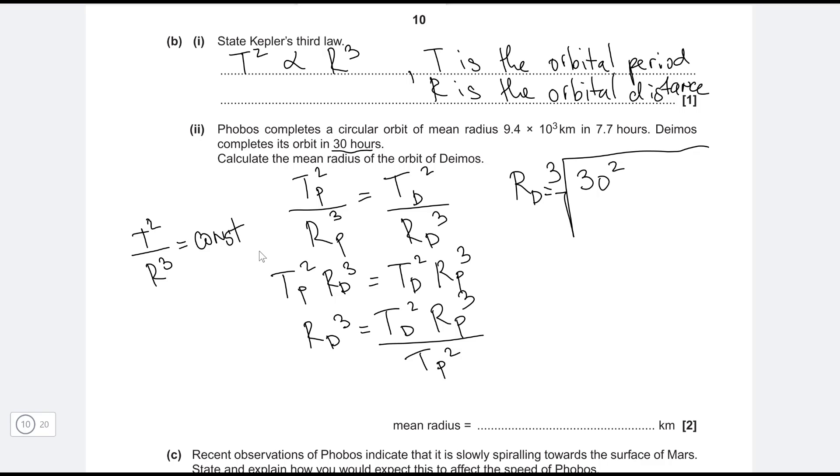So the time period of Deimos is, let's have a look, 30 hours, so it's going to be 30 squared. We're just going to keep it in hours in this case, divided by rp, which is the mean radius of the orbit of Phobos, which is 9.4 × 10³, and this is cubed like so.